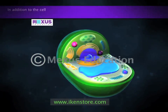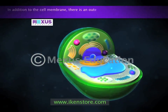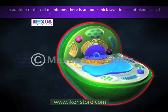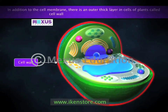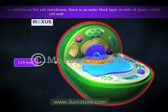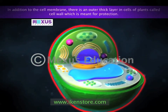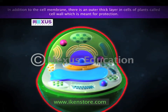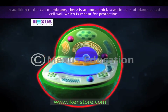In addition to the cell membrane, there is an outer thick layer in cells of plants called the cell wall. This additional layer surrounding the cell membrane is required by plants for protection against variations in temperature, high wind speed, and atmospheric moisture.